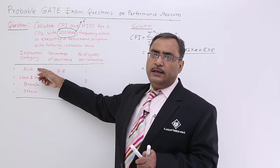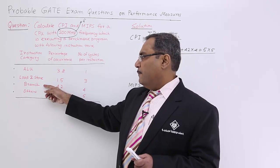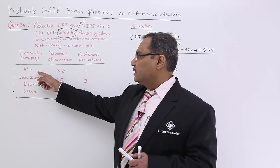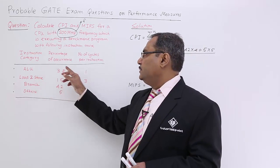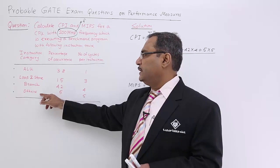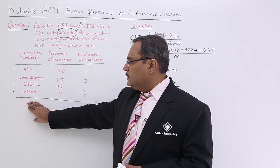Which is executing a benchmark program with the following instruction mix. This is the instruction mix. What are the categories? Arithmetic and logic unit oriented instructions, load and store instructions, branch instructions and others. This particular program has these instructions with these percentages of their operating. If you go on adding them obviously you get 100. And the ALU instruction is having 1 cycle per instruction. CPIs for the respective categories have been written in the third column.